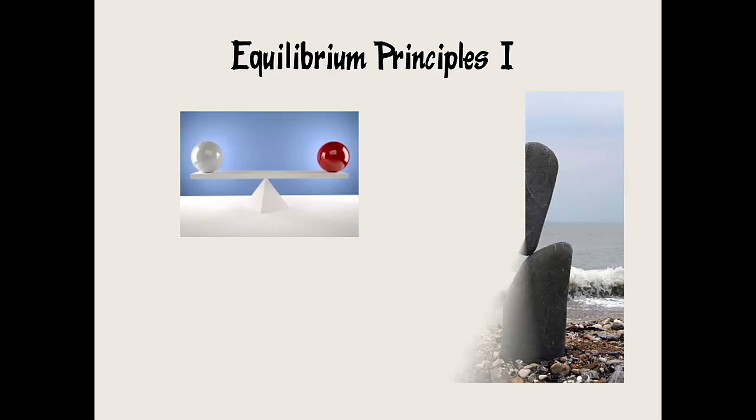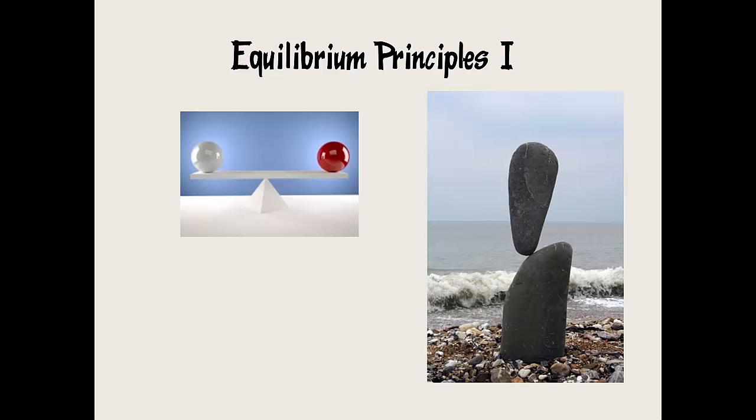Welcome to this first of three Level 2 Chemistry videos on Equilibrium Principles. Equilibrium can mean different things, and it is a term that is used in physics too. This seesaw is in a state of equilibrium as it is completely balanced. These rocks too are also balanced. These are both examples of static equilibrium, one that is perfectly balanced and there is no change.